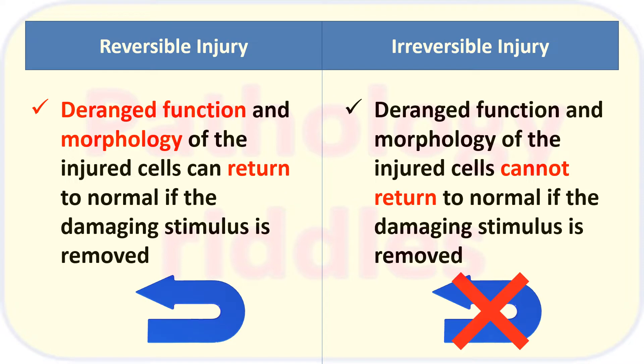So if the damaging stimulus is removed, the cell will come back to normal morphology. In cases of irreversible injury, the derangement of function and morphology of the injured cell will not come back to normal even if the damaging stimulus is removed.